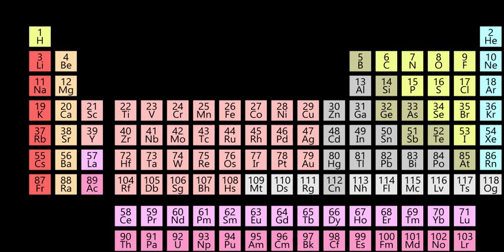Two earlier group number systems exist: CAS and old IUPAC. Both use numerals and letters A and B. Both systems agree on the numbers.